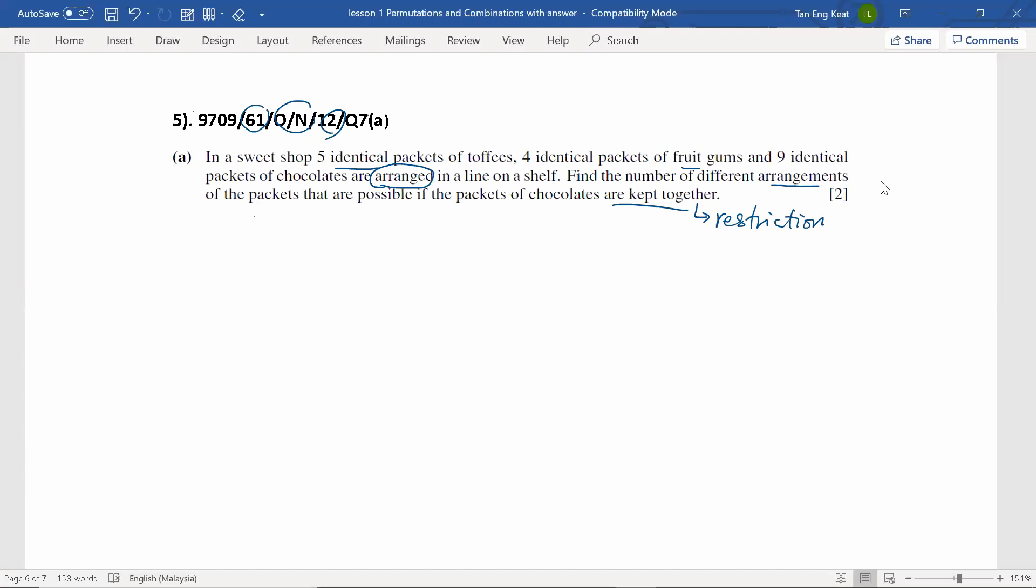So we use letter T to represent the toffee, the F to represent fruit gum, and capital C to represent the chocolate. And hence, we can write down like this. There are five identical packets of toffee, four fruit gum, and nine identical chocolate. According to the restrictions, we need to keep nine packets of chocolates together. So we circle it as we want it to be together.